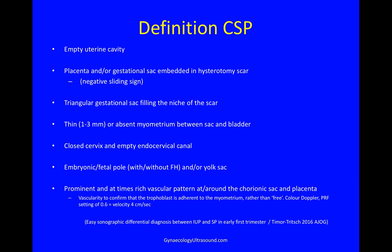The internationally agreed definition of a scar pregnancy is that the uterine cavity itself is empty. The placenta and/or gestational sac is embedded in the hysterotomy scar, so the sliding sign is negative. There is a triangular gestational sac filling the niche of the scar, and a thin or possibly absent myometrium between the sac and the bladder. The cervix should be closed and the endocervical canal empty. You will see an embryonic or fetal pole with or without fetal heart, and/or just a yolk sac. The vascularity will be prominent and at times very rich at or around the chorionic sac and placenta.